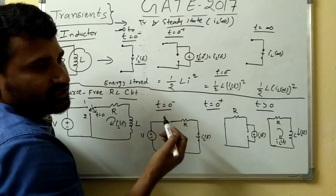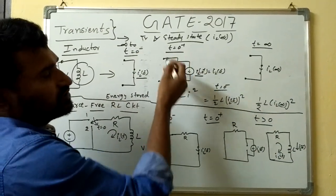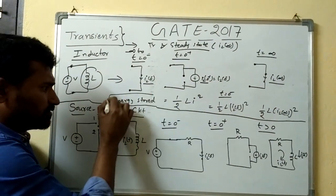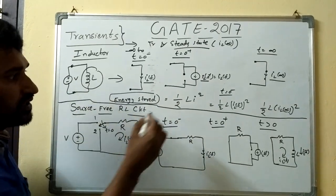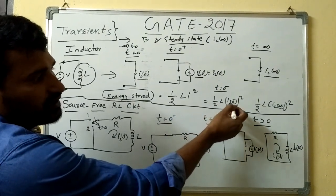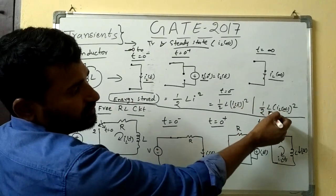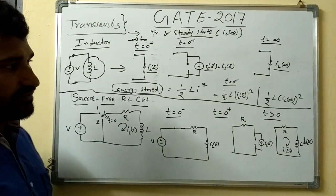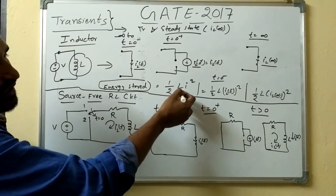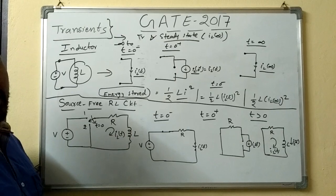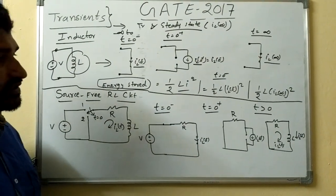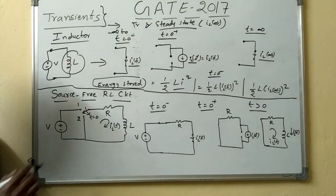At t = ∞, the inductor has again reached steady state after the switch closes at t = 0, represented by I_L(∞). Remember, the energy stored in an inductor at any instant of time is (1/2)·L·I². So at t = 0⁻ it is (1/2)·L·[I_L(0⁻)]², and at t = ∞ it is (1/2)·L·[I_L(∞)]². We will not go into the in-depth derivation of how we got the energy stored expression.